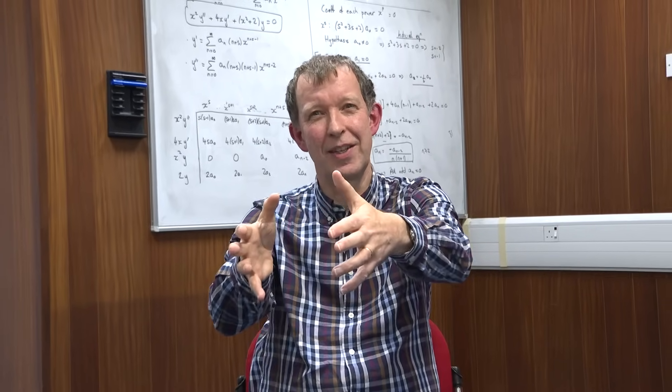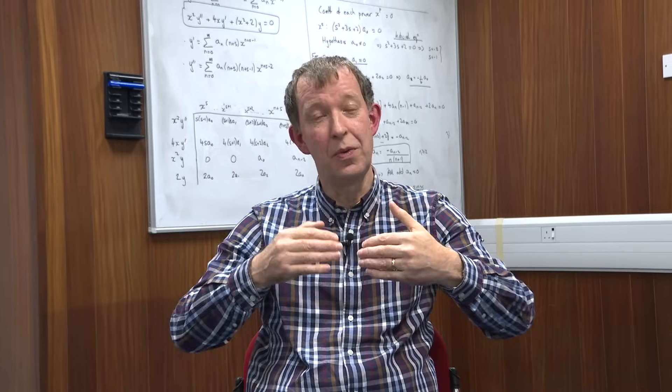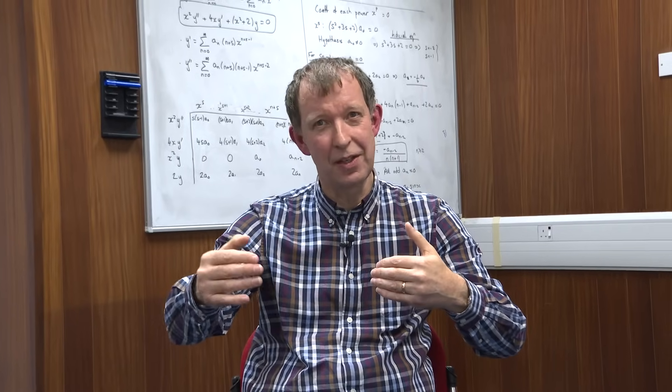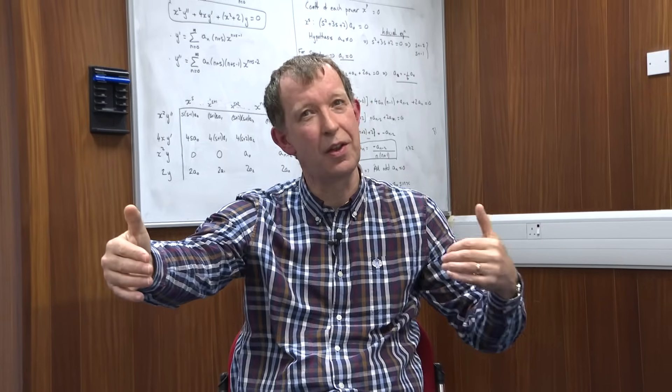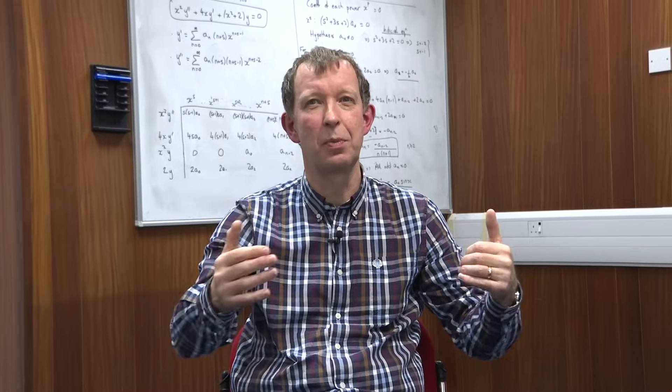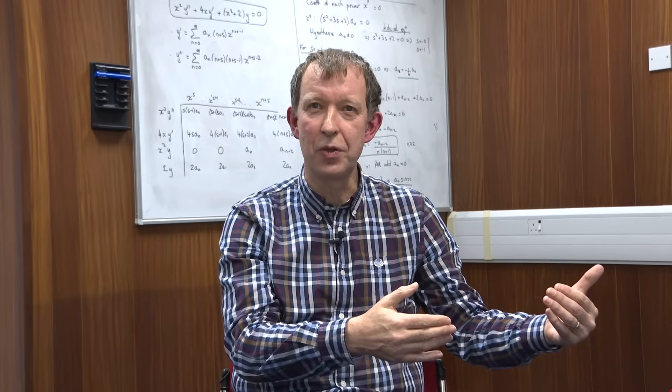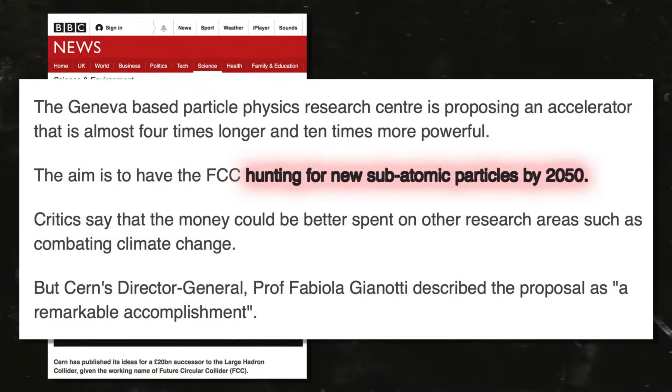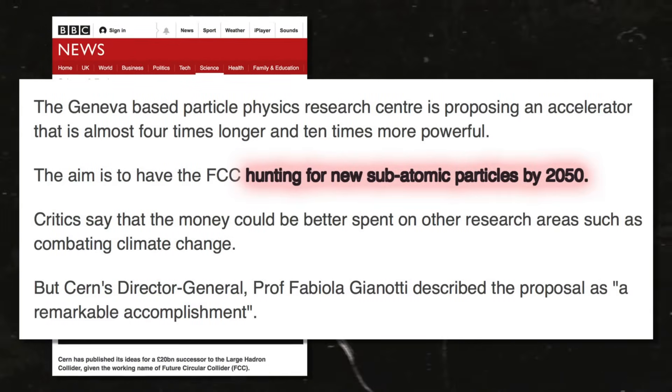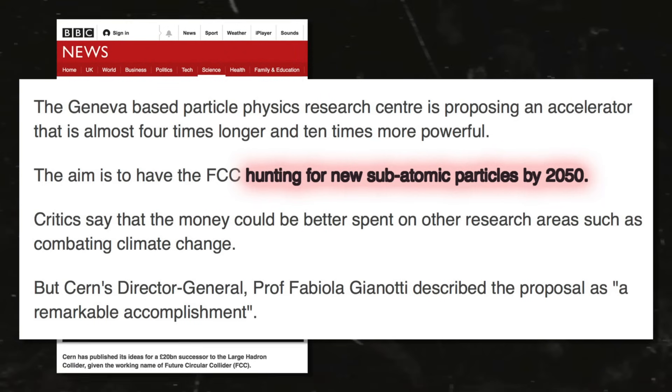There was an example where we did think we knew where we were going. And the decision on the LHC was made. And you do need to make these many years in advance. The LHC came into operation in 2008, nearly 30 years after the initial proposal. The proposal for the future circular collider would have it starting in 2050. Because you've got to build these things, you've got to develop the technology.